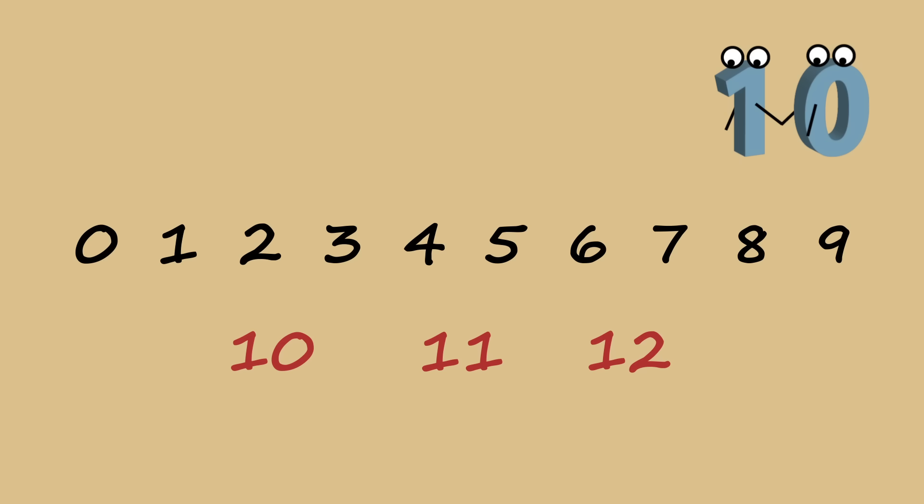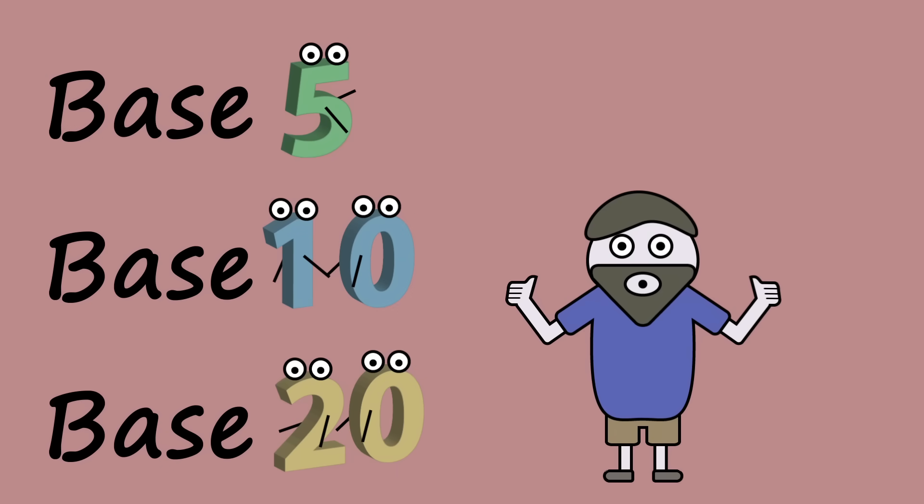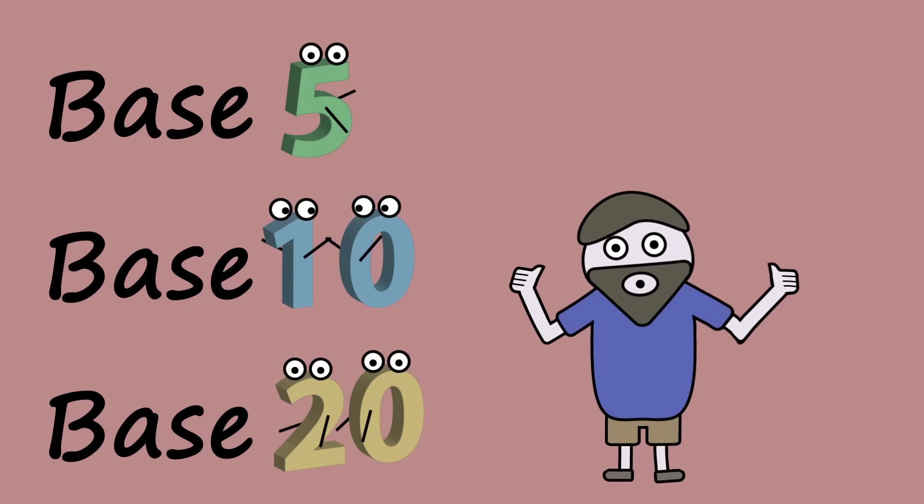This system is called base 10, but it is not the only way that we can count. We could use a number system with any number of digits. The most common bases throughout history have been base 5, base 10, and base 20. And this is because of the human body: 5 fingers on one hand, 10 fingers on two hands, and 20 fingers and toes.